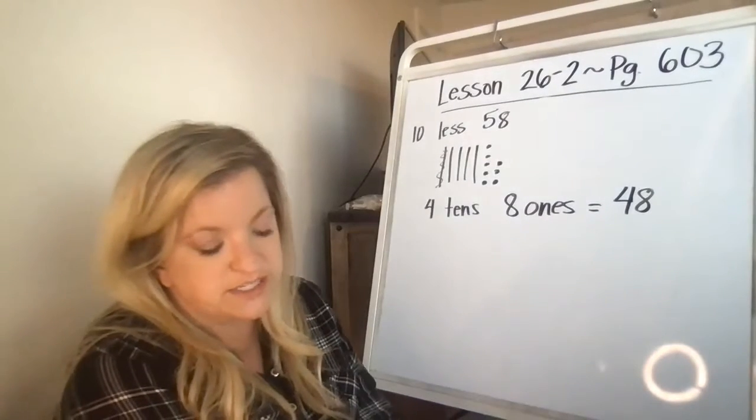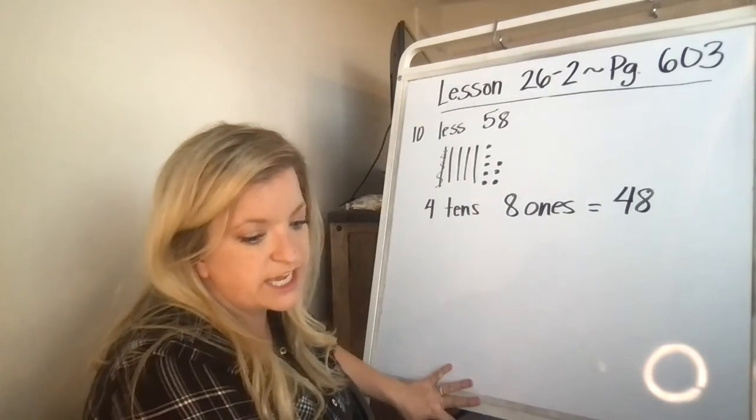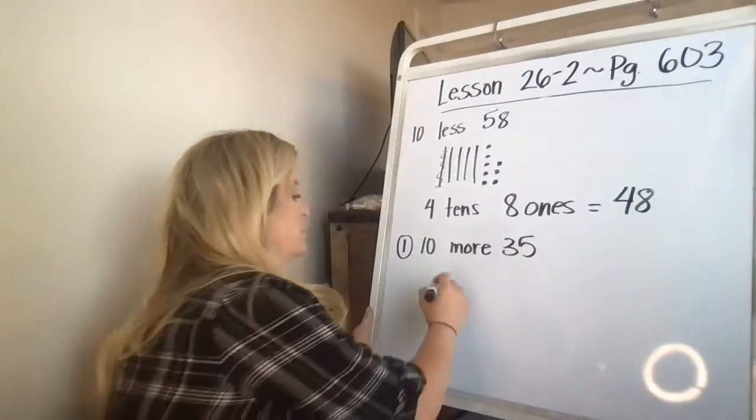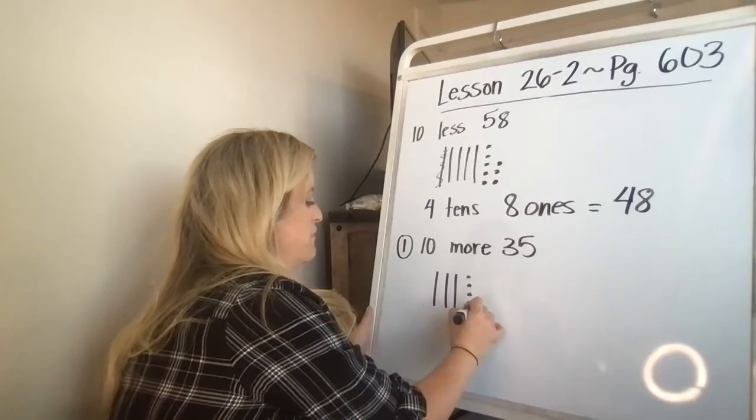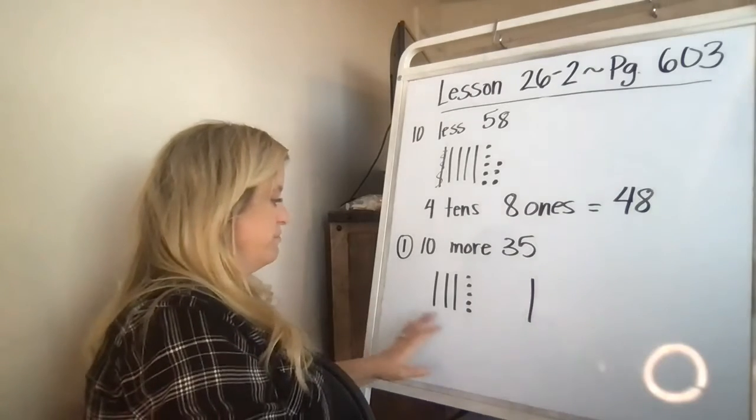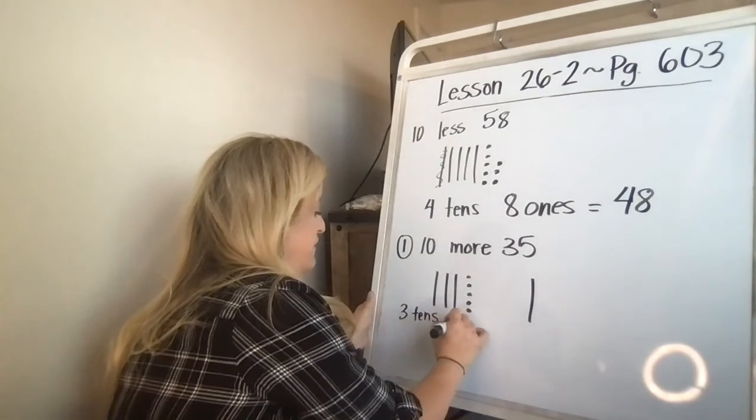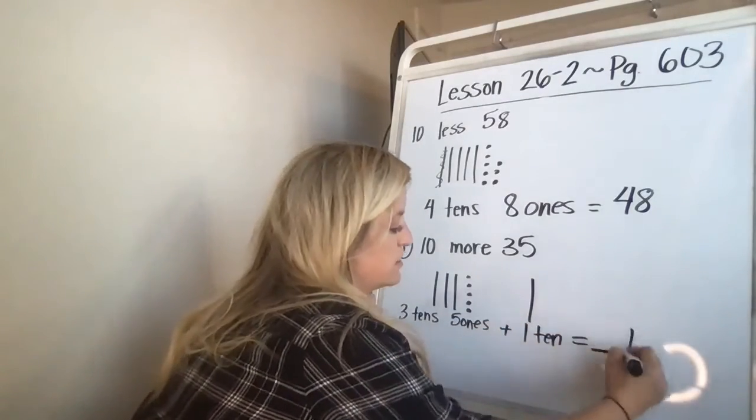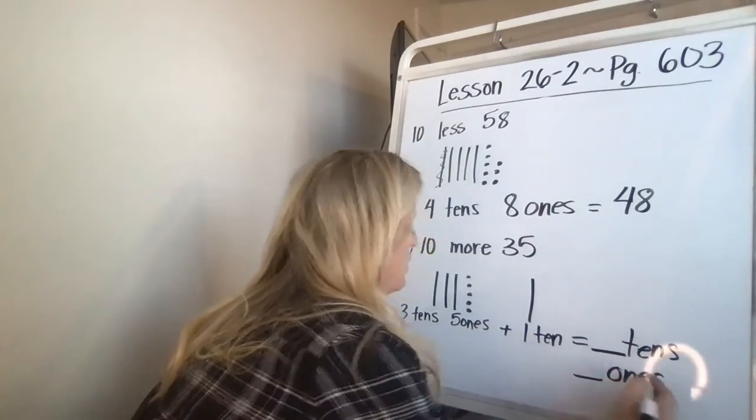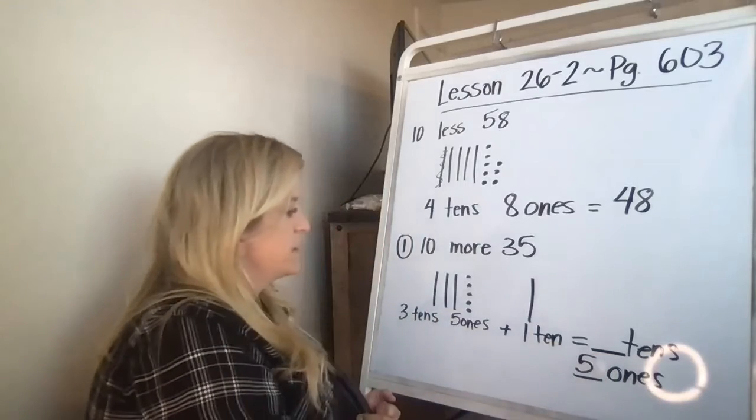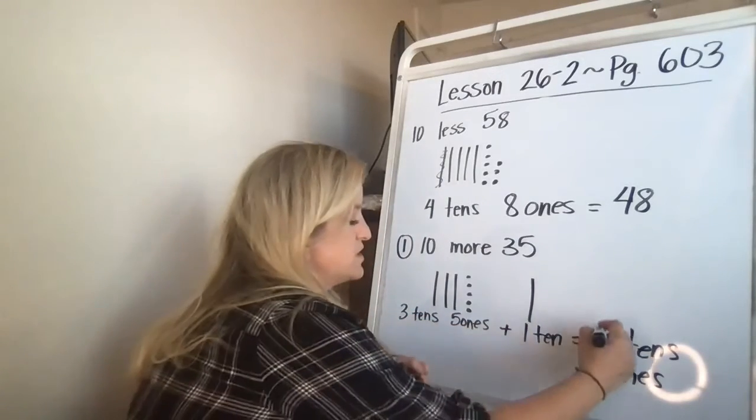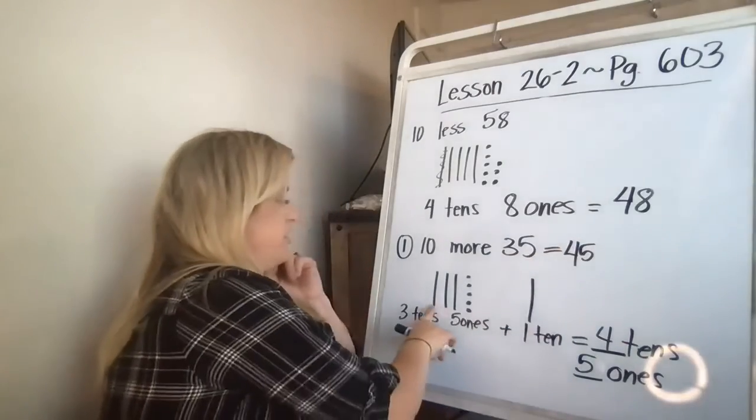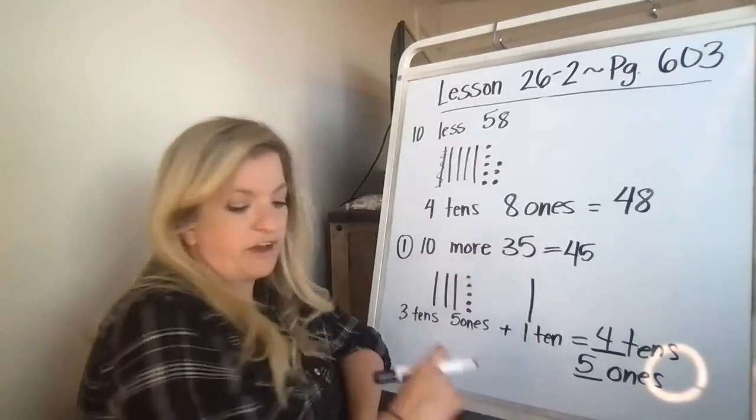Turn the page and you're just going to keep practicing. So at the bottom, it says, what is 10 more than 35? The book gives you 35, and another group of 10 because you're adding it. So here you have three tens and five ones plus here's that one 10 equals blank tens and blank ones. So I'm not changing anything with the ones. So I'm going to put in a five there, but I am adding in another one. One, two, three, four tens and five ones, which makes 45.